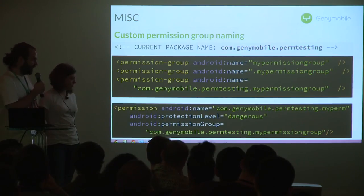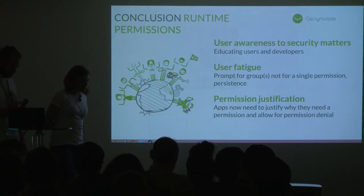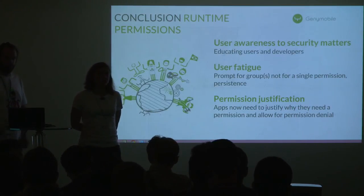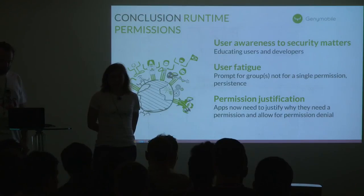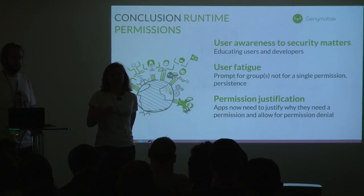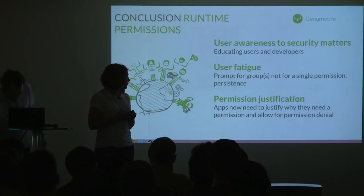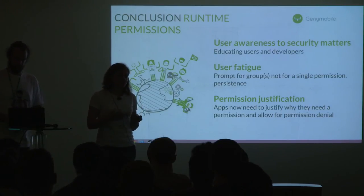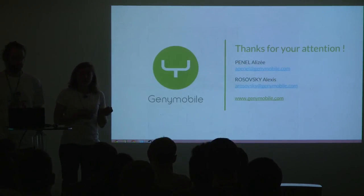Another thing is the naming convention. You need to use a dotted package-name-style naming. The first three options for declaring a permission group are valid — the system will prefix the first two with the current package name but register the permission group as a full name. So when referencing it, you need to use the full name. Google provides means to make users and developers more sensible to security matters, though this implies user fatigue — that's why it relies on groups. The user has the choice to allow or deny per group, so developers now need to justify the need for a permission.